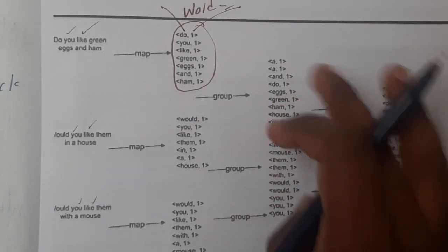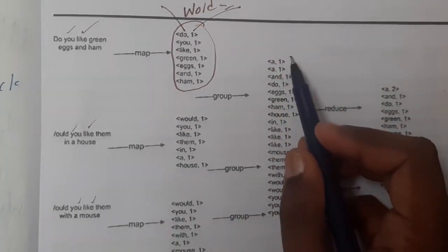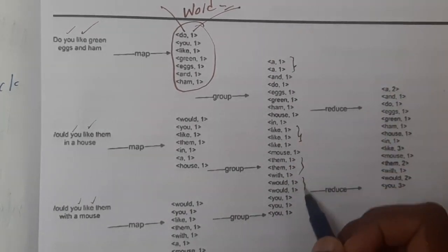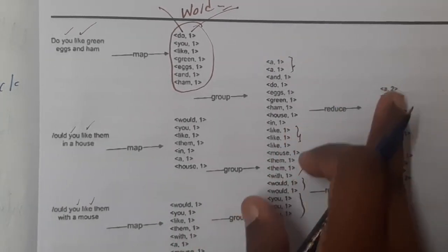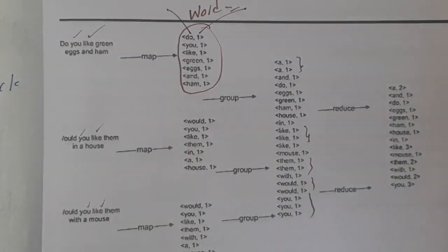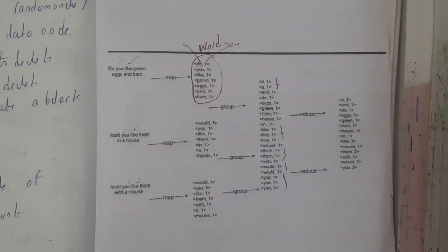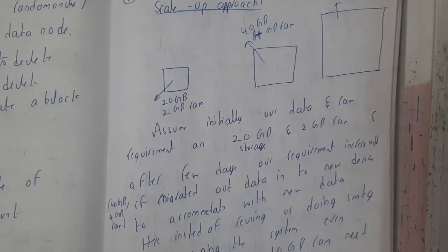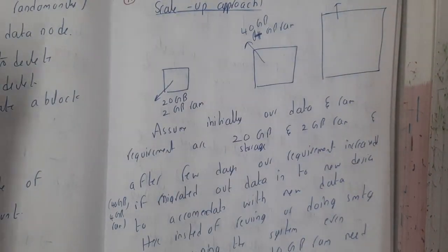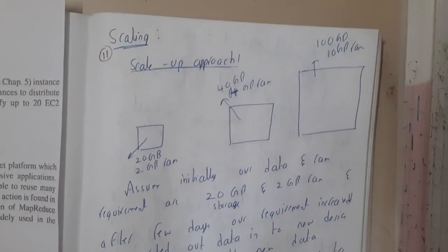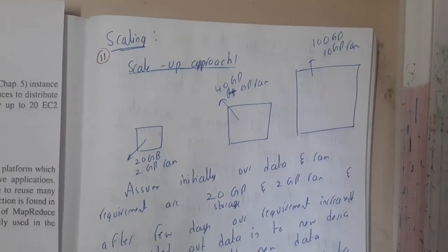The reduce step takes the grouped data and aggregates the counts. For example, we end up with three likes, two thems, two woulds, and three yous. This is the MapReduce process — demonstrated here on three input strings, but it scales to ten thousand or more. In the next lecture we will be discussing scaling.